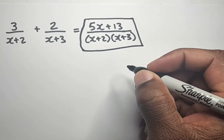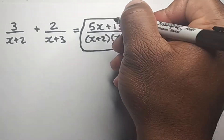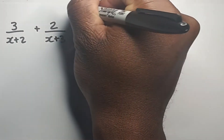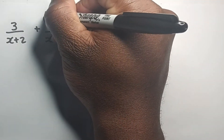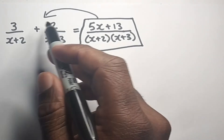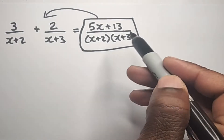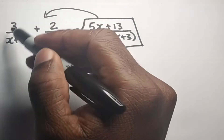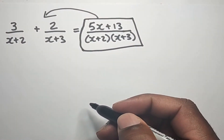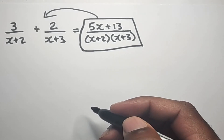Now when we talk about partial fractions, what we want to do is actually move from the simplified fraction to these two simpler fractions over here. So we want to move from the simplified fraction to two simpler fractions. Now what we want to know is how do we approach this?